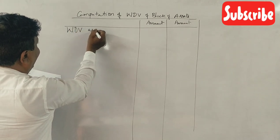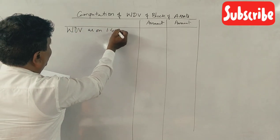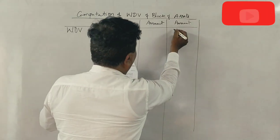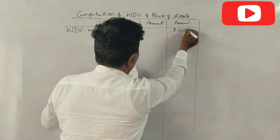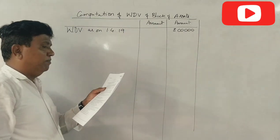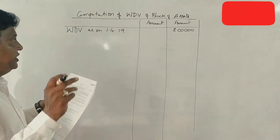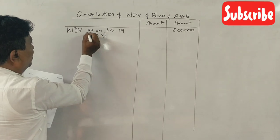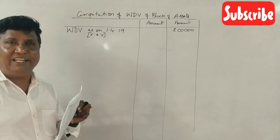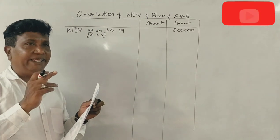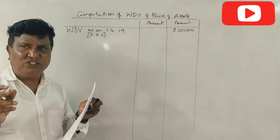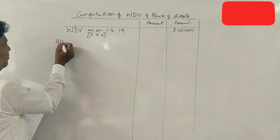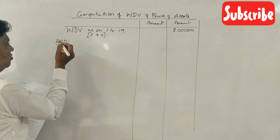As on 1st April 2019 — opening written down value: 8 lakh rupees. These are assets — machines X and Y. As on 1st April 2019, the written down value opening balance is 8 lakh.